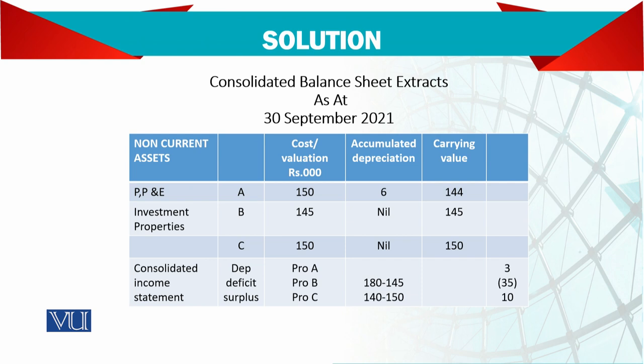For Property B, it was 145 with nil accumulated depreciation, so we report it at 145. However, the revised fair value was 180 — wait, in this case it decreased from 180 to 145, so there is a decrease of 35, and that will go as a deficit to the income statement. For Property C, it goes from 140 to 150, so there is an appreciation of 10, and this also goes to the income statement.